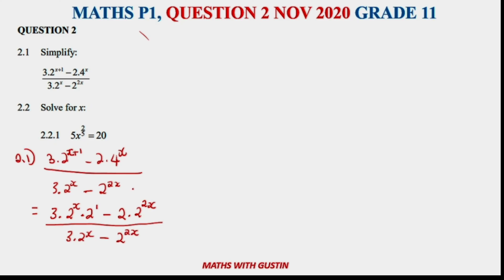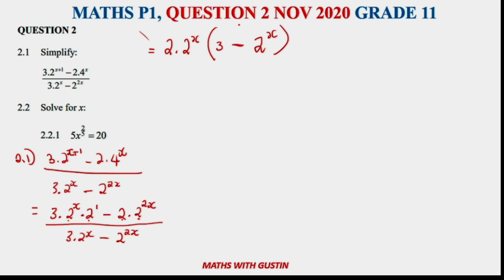At the top, you've got a 2, a 2 to the power of 1, a 2 to the power of 2x, and a 2 to the power of x. You can take out 2 times 2 to the power of x as a common factor. So we are left with 3 minus 2 to the power of x in the bracket — verify by expanding with binomial multiplication.